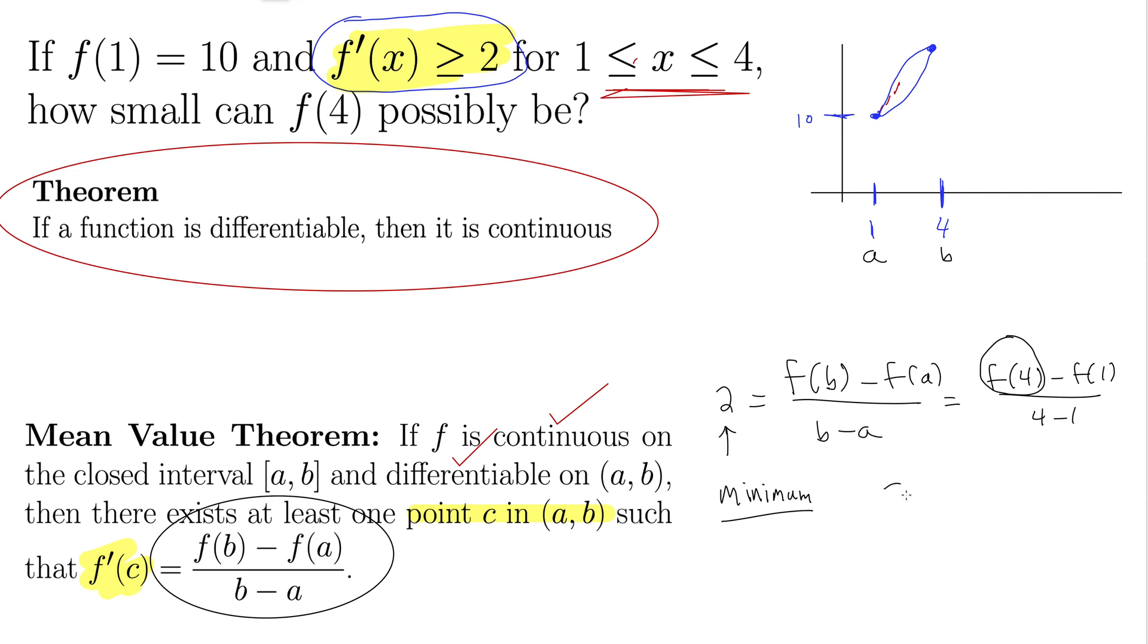So let's just examine the minimum possible case where it equals 2. So this gives us 2 equals f(4) minus, well we know f(1) is 10, that's given, over 3, and now we can simply solve for f(4). Multiply up by 3, 6 equals f(4) minus 10, and so f(4) must be 16 at a minimum.